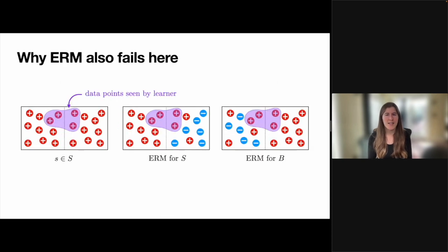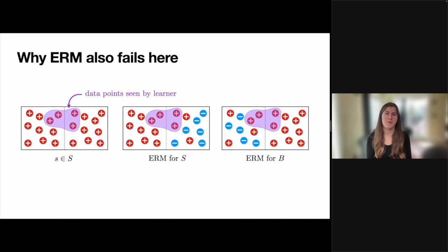This example also highlights another way in which comparative learning may diverge from the standard realizable and agnostic learning settings. While empirical risk minimization (ERM) — the algorithm that outputs the hypothesis that minimizes the empirical risk over the training data — is known to perform well on agnostic and realizable learning problems and get close to the optimal sample complexity upper bound, it can fail miserably when applied to comparative learning. For instance, we just saw that for this particular example, no samples are required to comparatively learn.